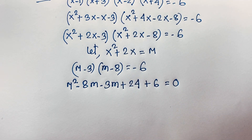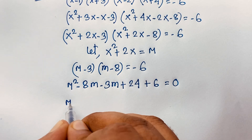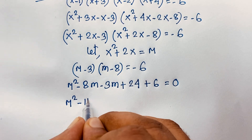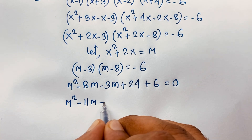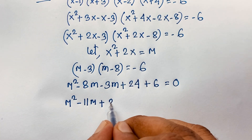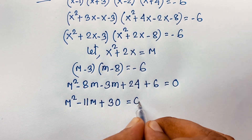Moving negative 6 to the left side gives positive 6, so we get the quadratic equation: m squared minus 11m plus 24 plus 6 equals 0, that is m squared minus 11m plus 30 equals 0.